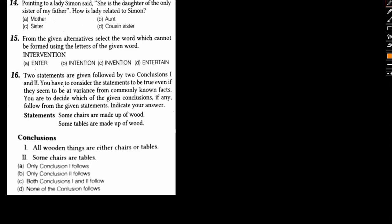Pointing to a lady, Simon said, she is the daughter of the only sister of my father. How is the lady related to Simon? So, this is Simon's father. This is Simon. We do not know the gender of Simon, so Simon can be a girl or a boy. I am using both signs - circle is for female and square is for male. Simon can be anyone.